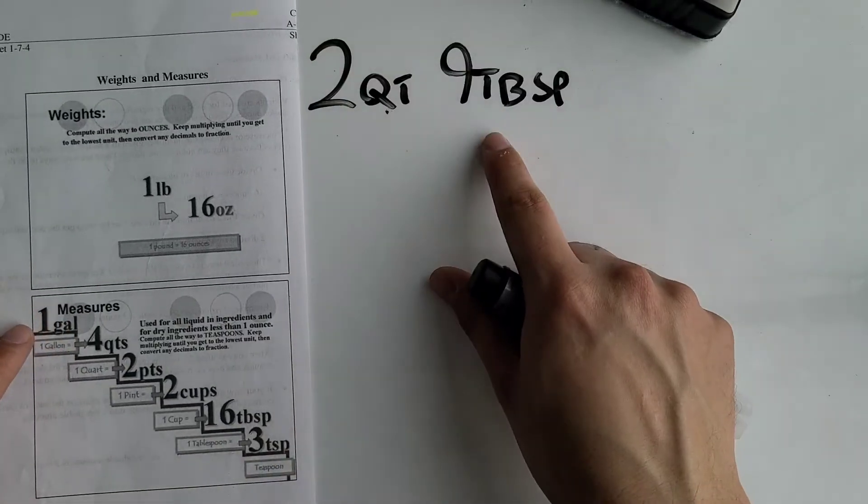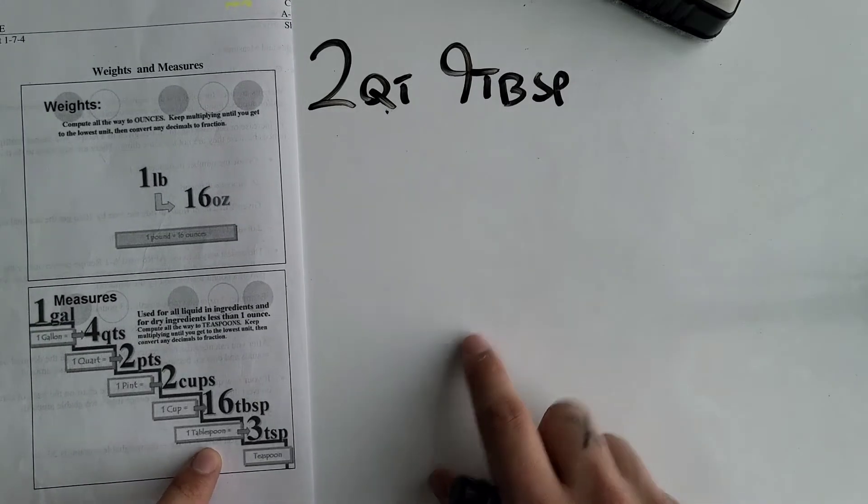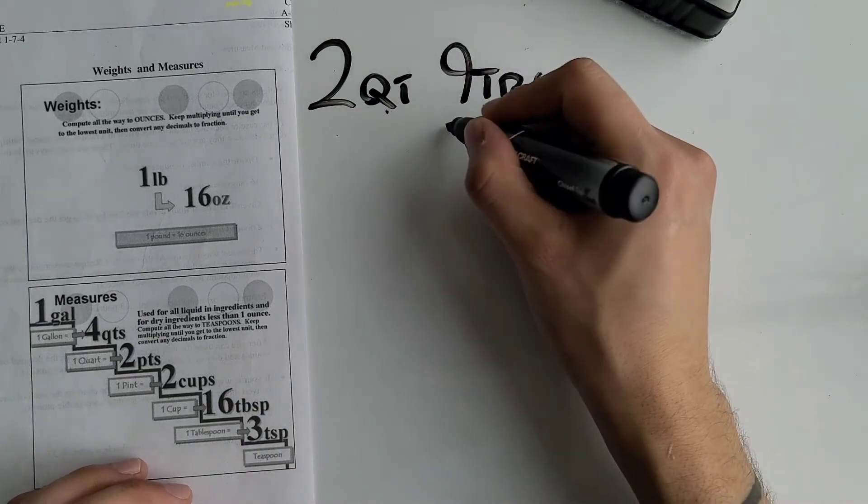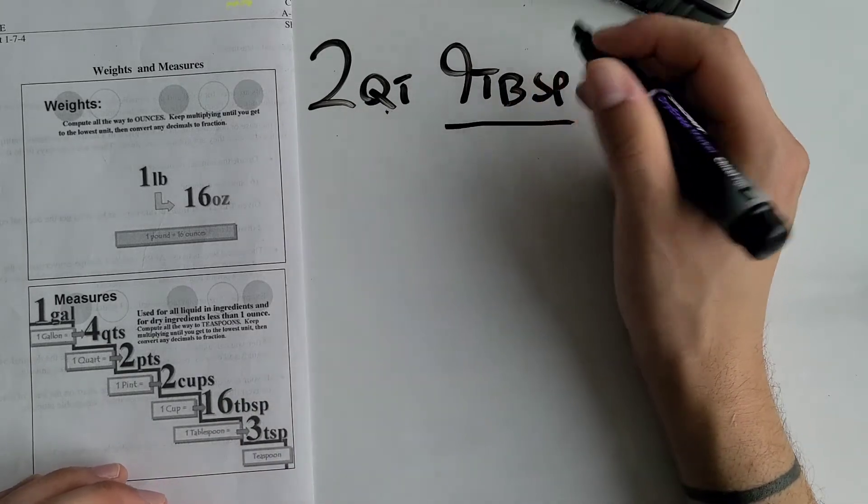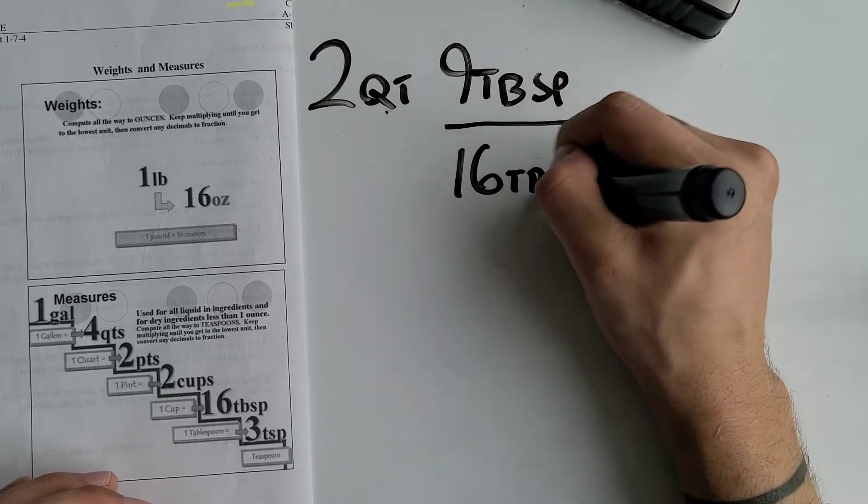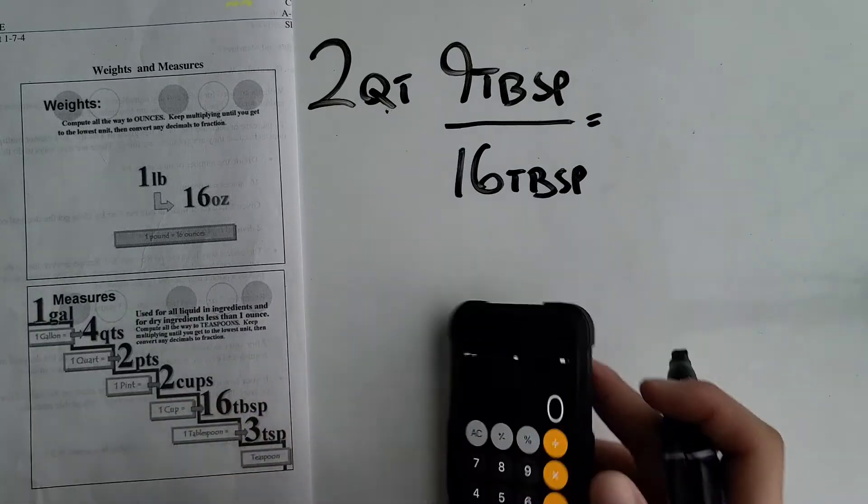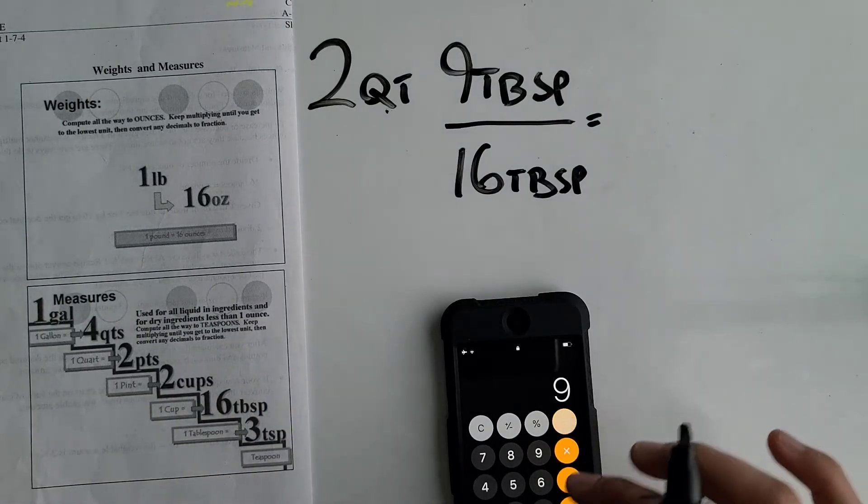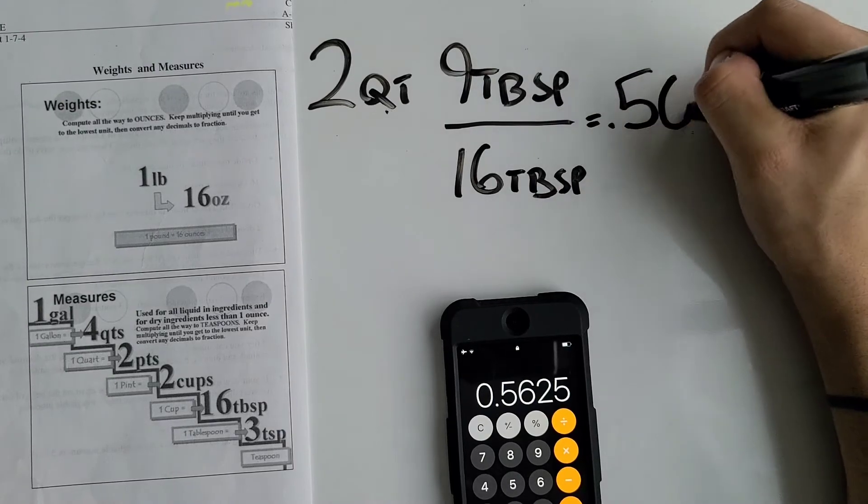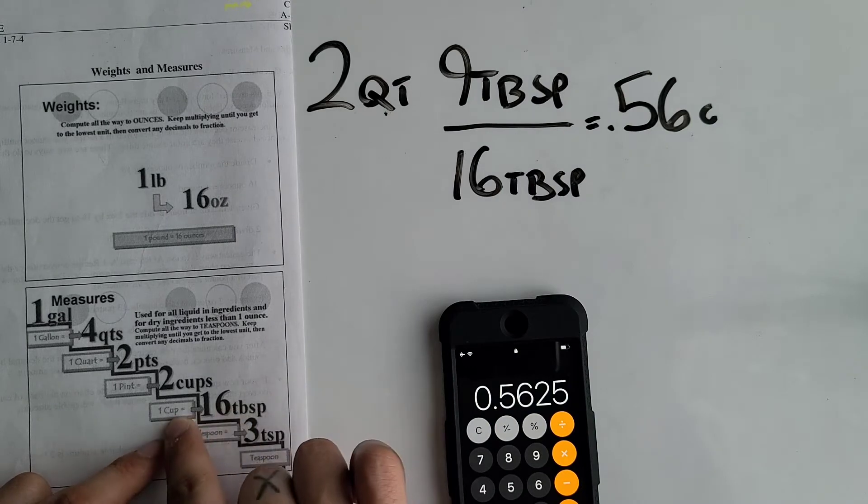Since we're trying to convert this nine tablespoons into quarts, we're right here so we divide it by 16 tablespoons to convert it into cups. So 9 divided by 16 equals 0.56 cups because we were here and now we just converted it to this.